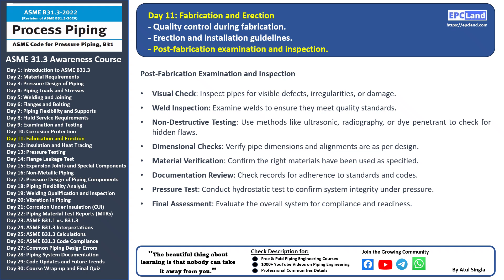Non-destructive testing: utilize non-destructive testing methods such as ultrasonic testing, radiography, or dye penetrant inspection — these techniques help identify any hidden flaws or defects not visible to the naked eye. Dimensional checks: verify that the dimensions and alignments of the pipes are in line with the design specifications, as proper dimensions are essential for the correct functioning of the system. Material verification: ensure that the correct materials have been used as specified in the design to avoid compatibility issues and ensure the system's longevity.